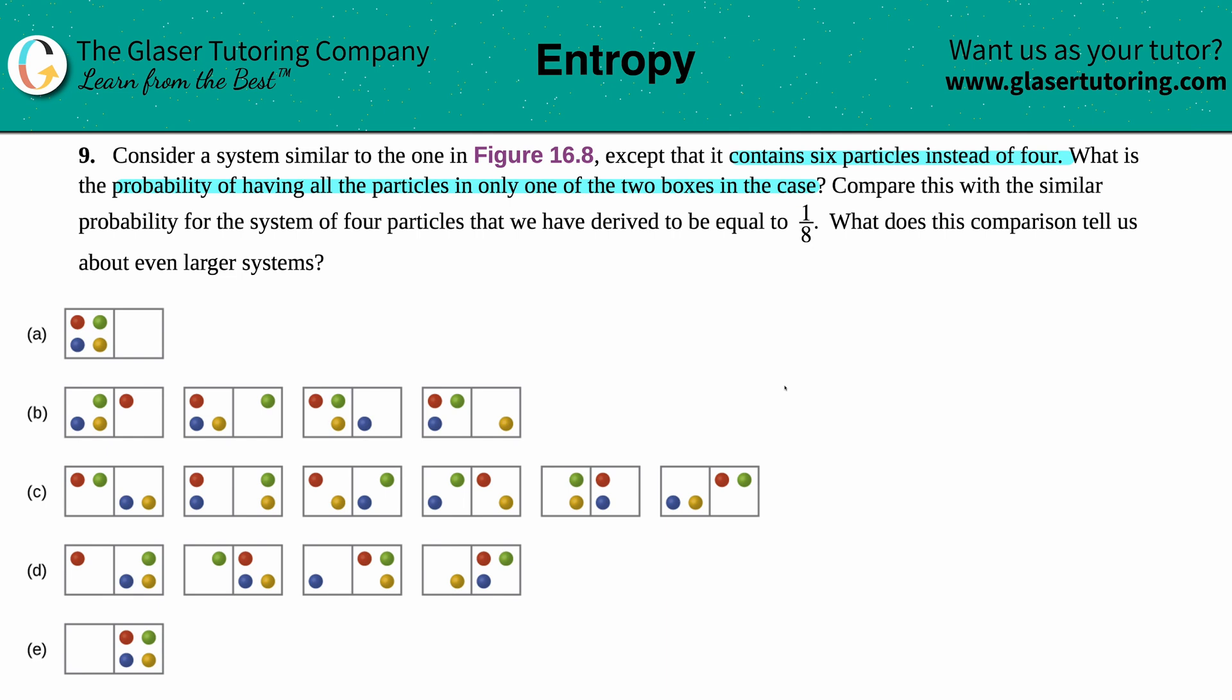Okay, so before we read on, let's answer this question. We're talking about probability here, so a little bit of math. In order to find out the probability of having all the particles in only one of the two boxes, a probability value is basically a fraction, a ratio of sorts in which it's something that you're asking divided by the total possible outcomes.